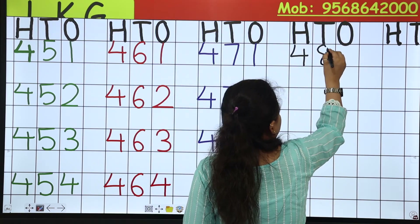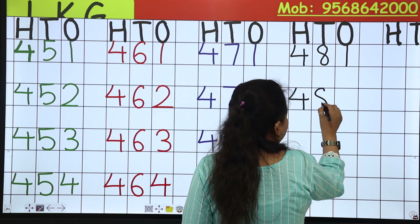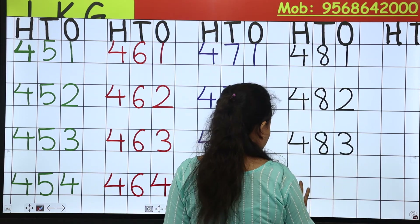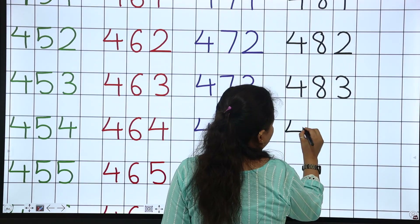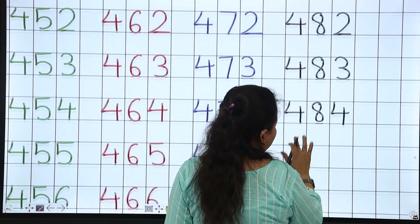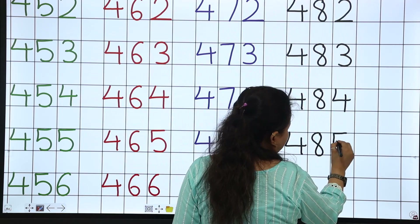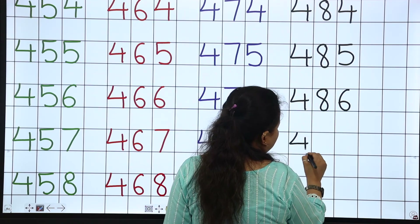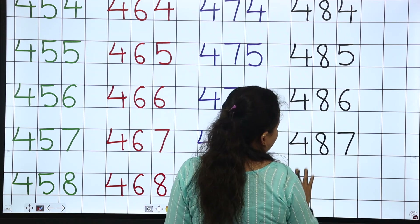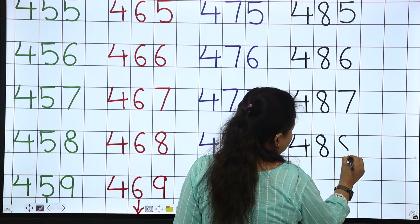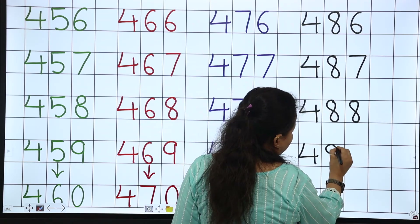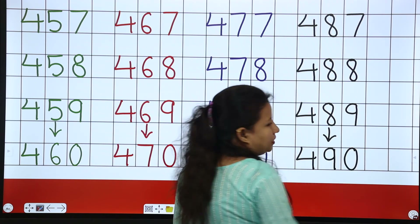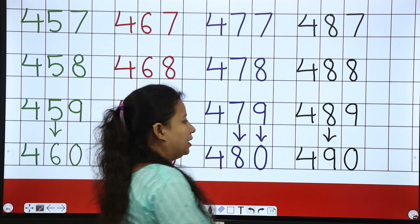481, 482, 483, 484, 485, 486, 487, 488, 489. Now 490 — after 8, 9, 0. Now next line starts with 491.